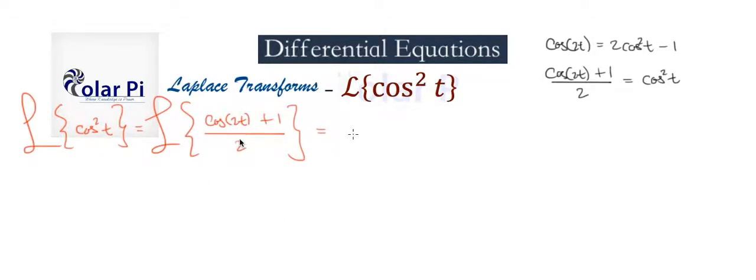Dividing by 2 is multiplying by a half here. So we could take out the constant one-half.